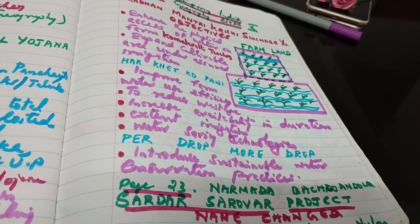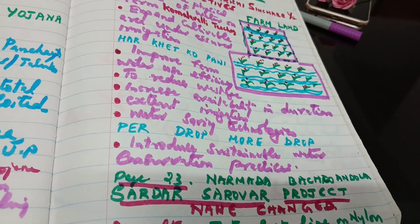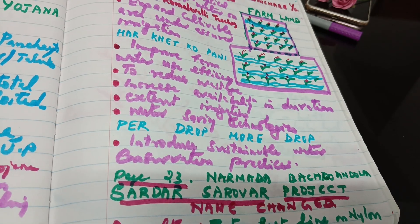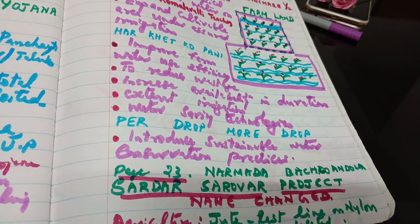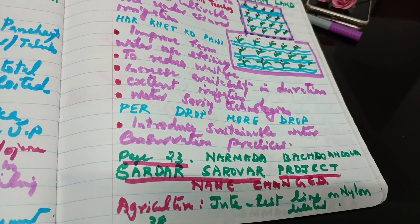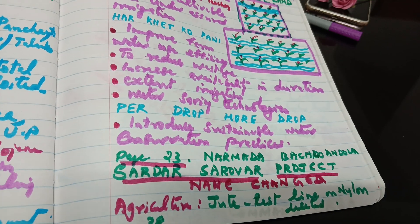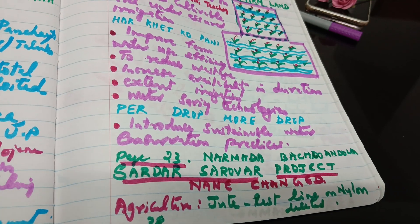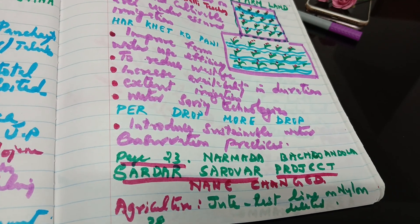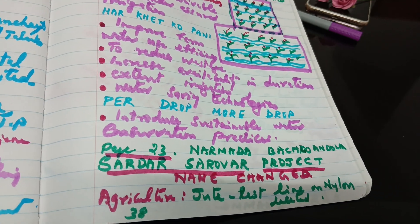On page 23, the reference to Narmada Bachao Andolan has been changed. The name has been updated to Sardar Sarovar Project.